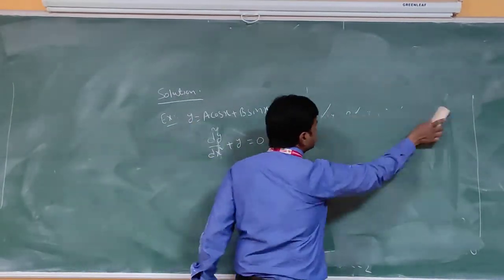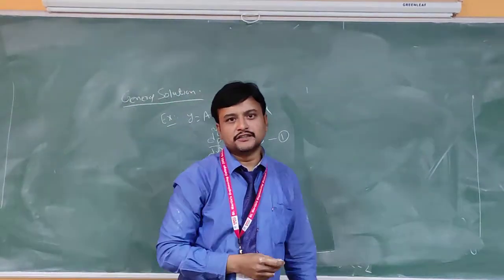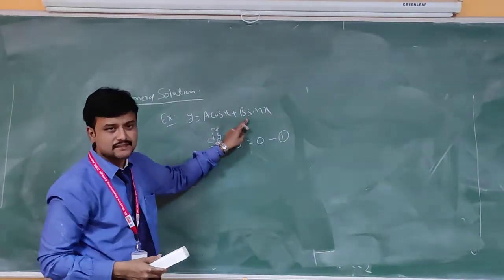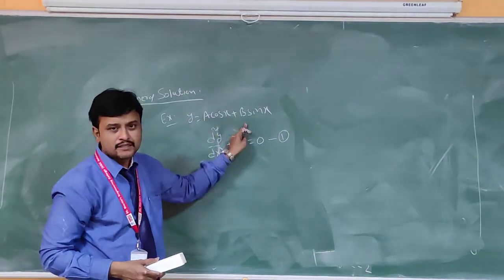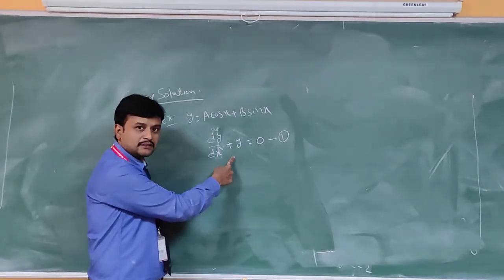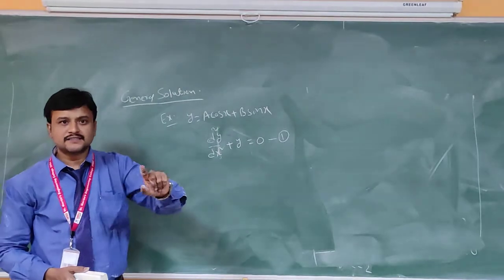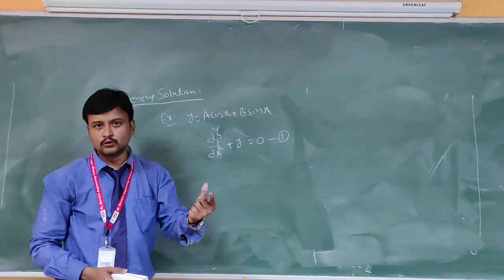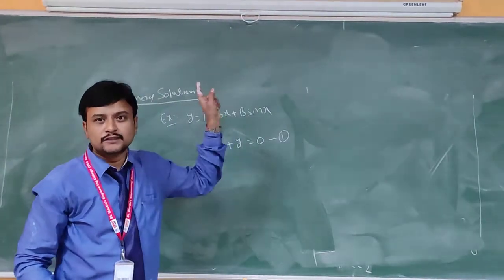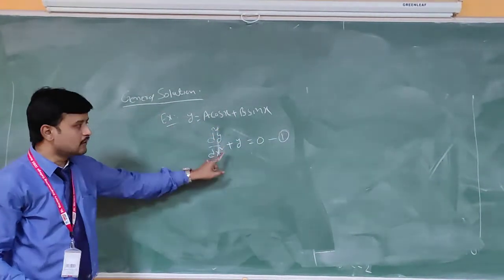Now coming to the general solution of a differential equation. If the number of arbitrary constants in the solution equals the order of the differential equation, then that solution is called the general solution. So we can say that y = a cos x + b sin x is a general solution of this differential equation, since it contains two arbitrary constants a and b and the order is 2.